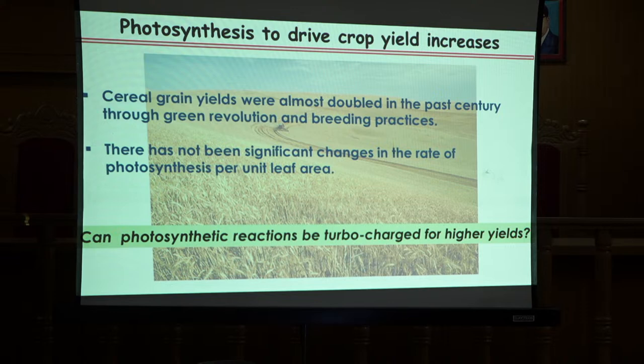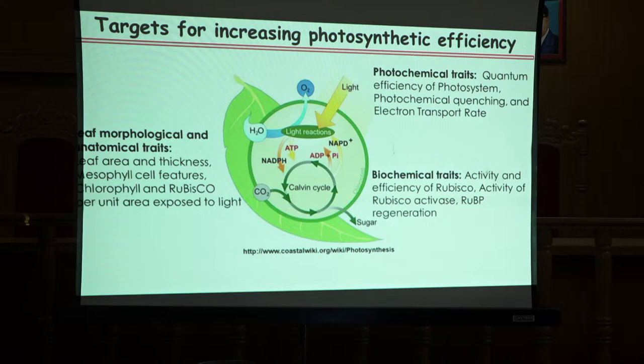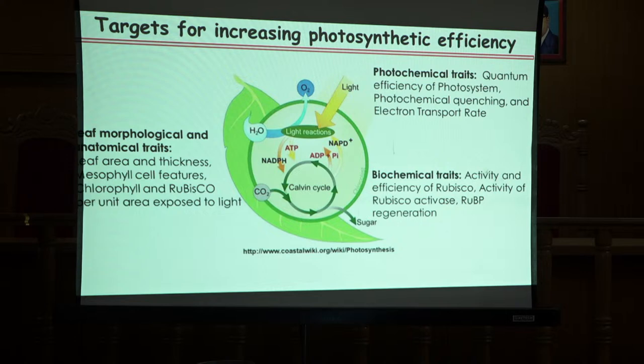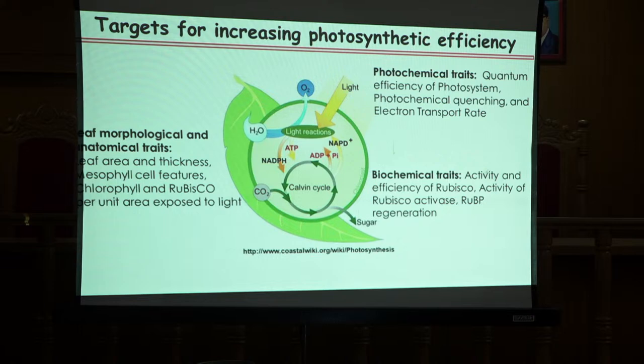The basic question we are asking is: can photosynthesis be turbocharged for higher yields? To increase photosynthetic efficiency we need to understand how photosynthesis works. Photosynthesis has two major parts: light harvesting, which generates electrons that the electron transport chain delivers as reducing power for CO2 assimilation (photochemical traits), and CO2 assimilation itself (biochemical traits). Since everything takes place inside the leaf, can we optimize leaf developmental traits — leaf morphological or anatomical traits — to increase photosynthetic efficiency?